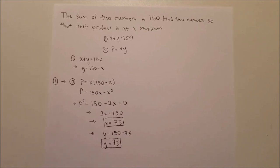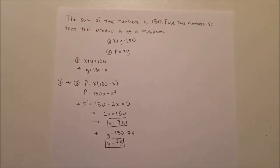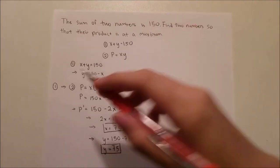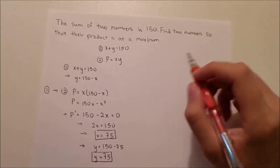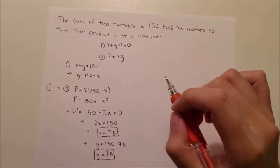We will be using this function to show you guys how to do it. The sum of two numbers is 150. Find two numbers so that their product is at a maximum.